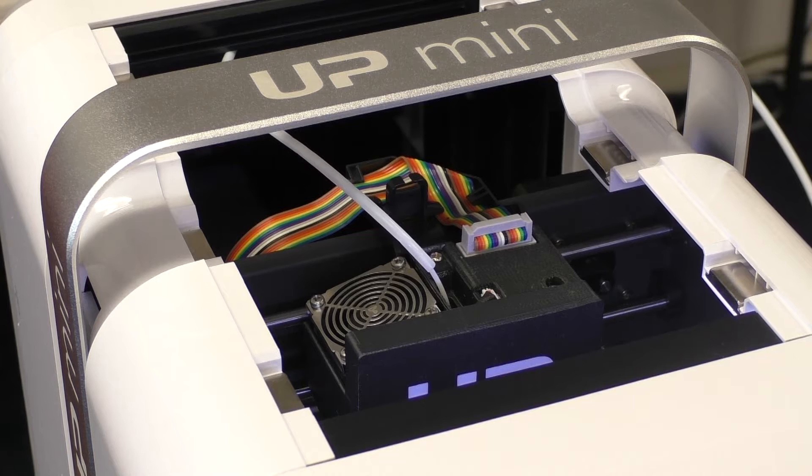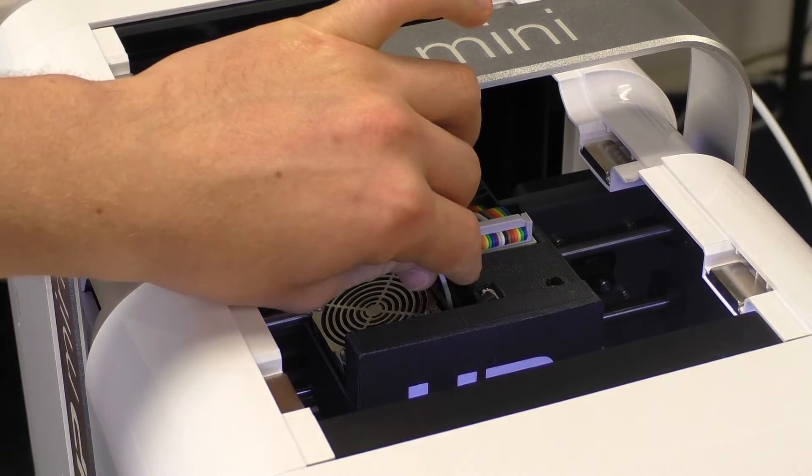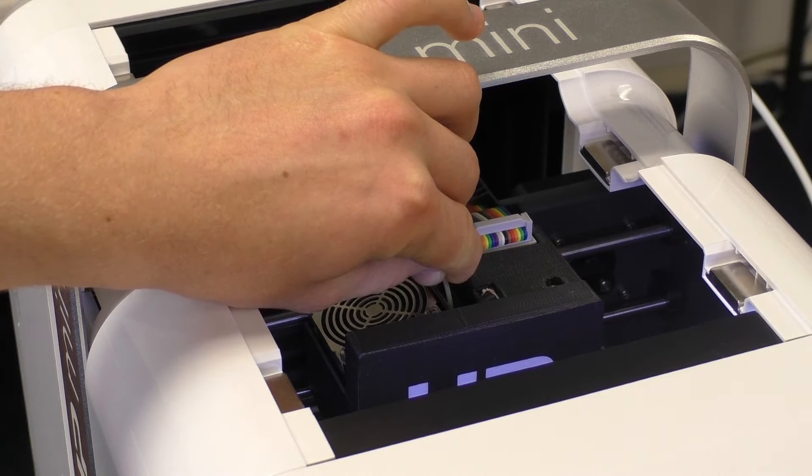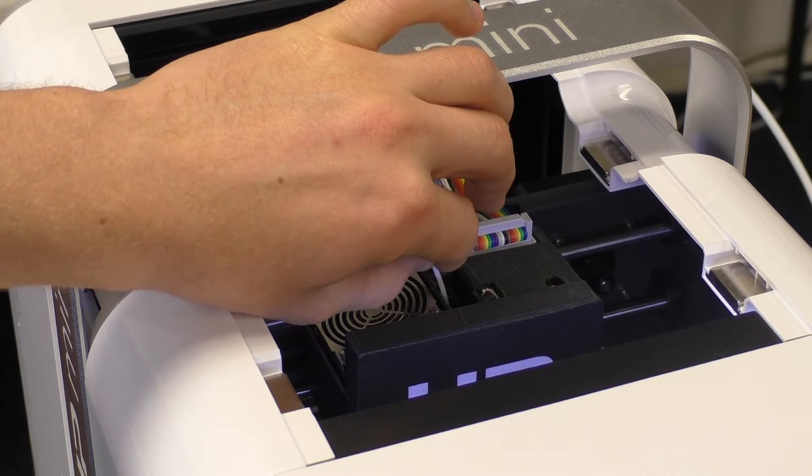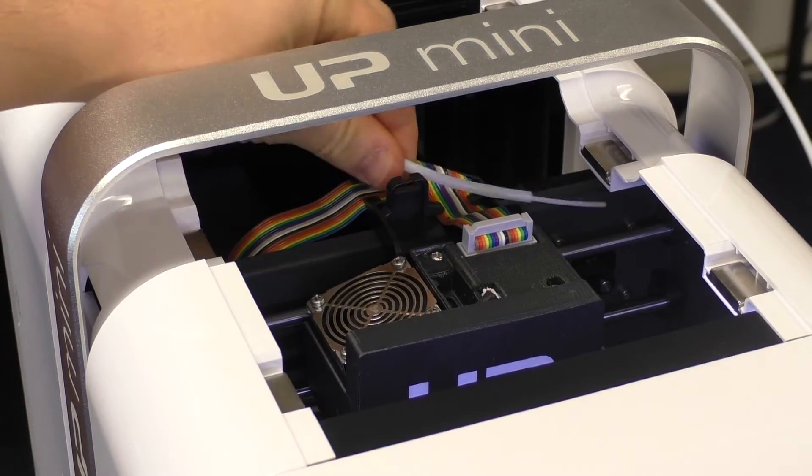The printer will beep to let you know that it's just started to retract the filament. There we go, so ours is just starting to come out and when it's all the way out you can remove your filament and move it to the side.